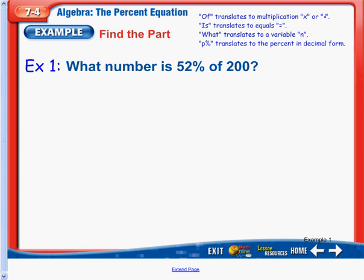Example number 1 here. We have what number is 52% of 200? So starting off, what, I have n, so I know I'm solving for a number here, so that just means I've got a number.